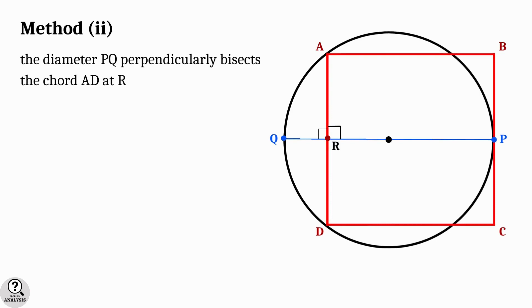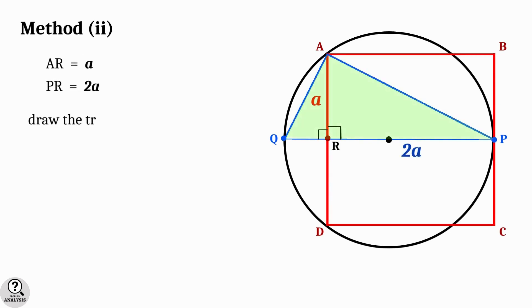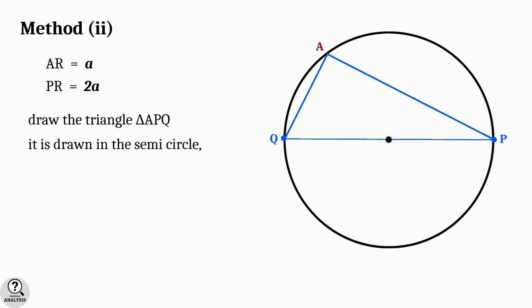In our figure, we have drawn the diameter PQ. Because of the symmetry, this diameter perpendicularly bisects the chord AD at the point R. As we told earlier, AR equal to a and PR equal to 2a.